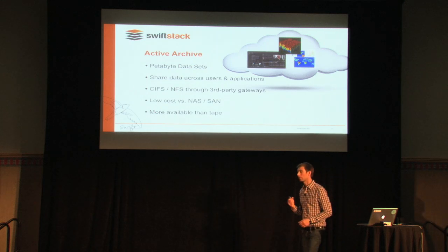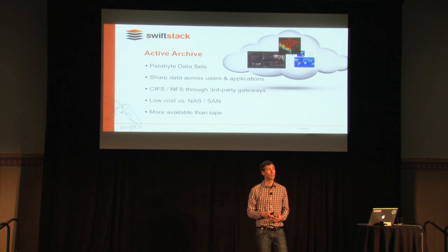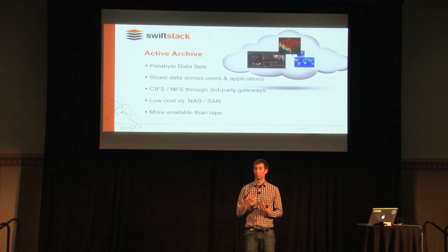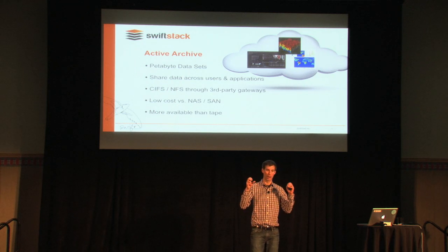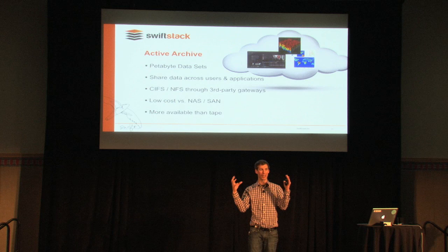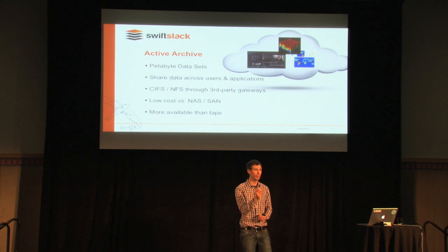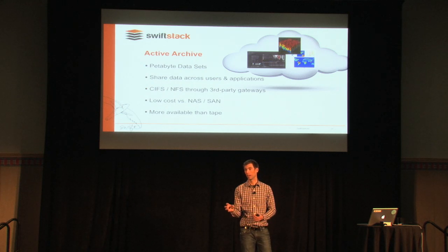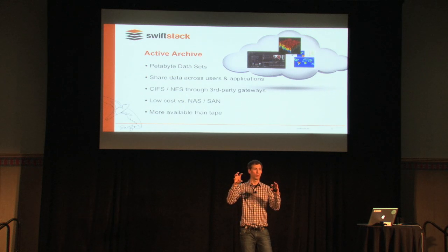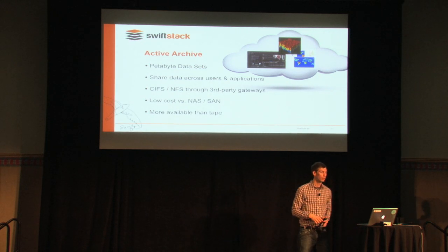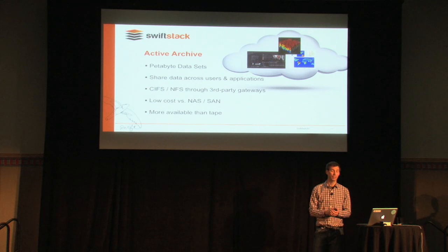The next category is active archive. We're seeing this with HPC and video, where organizations want to manage terabyte datasets or very large images and distribute that data across multiple data centers or regions. Different sites, campuses, or researchers can then access that data and pull it into whatever processing system they have.